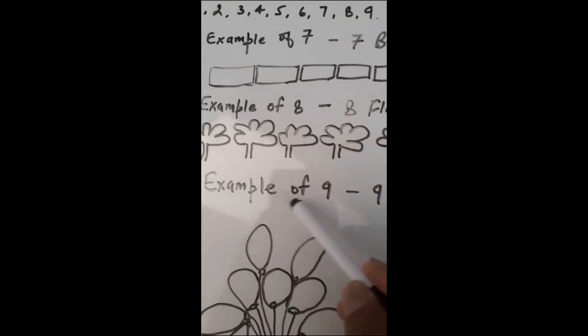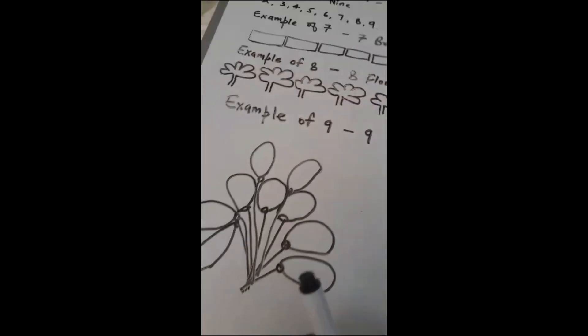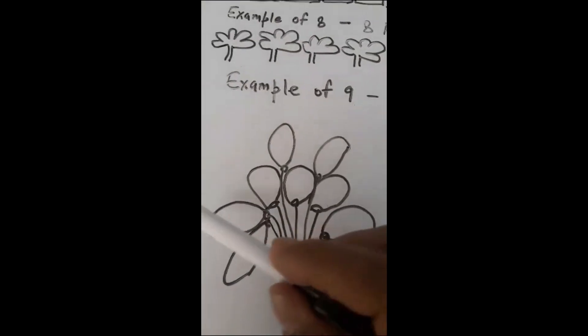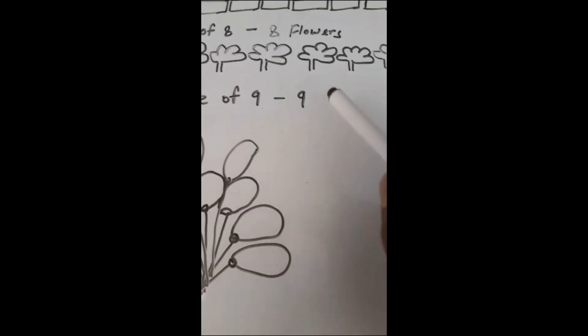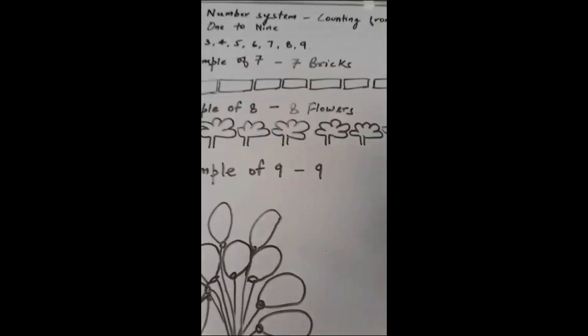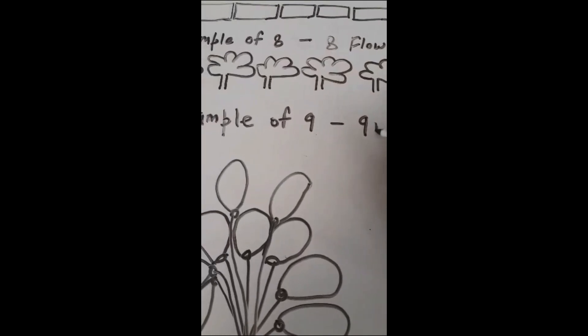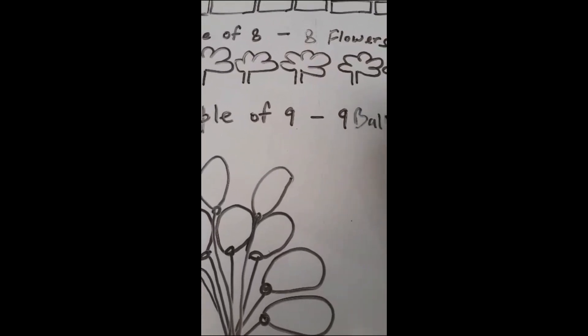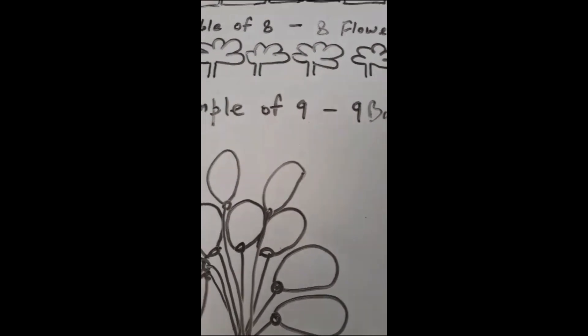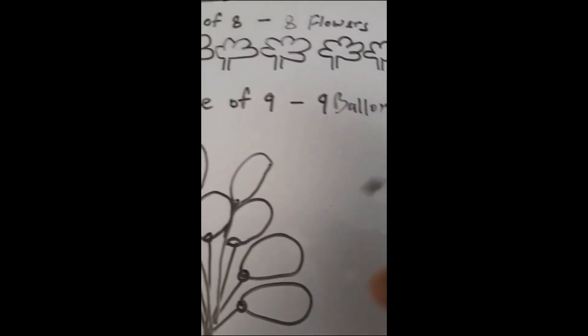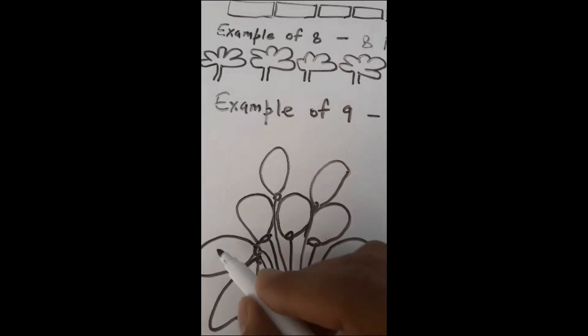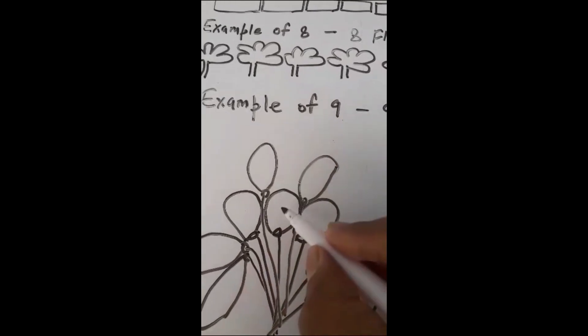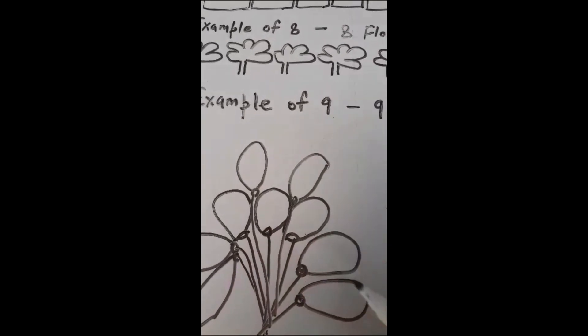Now example of 9. We will see that 9 balloons are there, I have not written it yet, but I will write 9 balloons. So 9 balloons are there: 1, 2, 3, 4, 5, 6, 7, 8, 9.